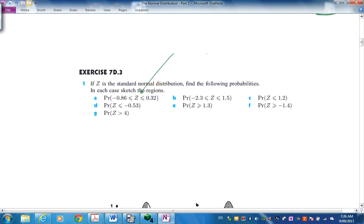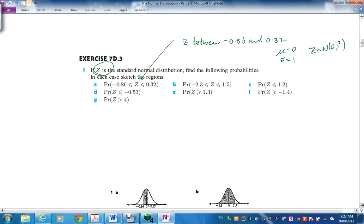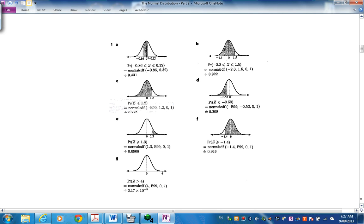This means Z is between neg 0.86 and 0.32. And this is all on the standard normal distribution. So mu is 0, sigma is 1. Or Z is normally distributed as N(0, 1). Getting used to that notation. Pause the presentation. Check those numbers out. Here are the answers to the first question.